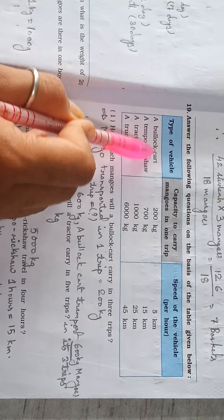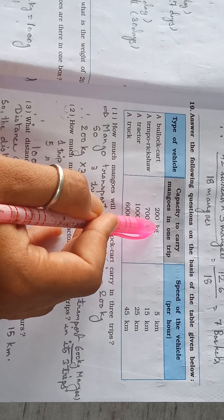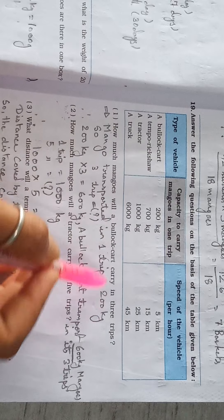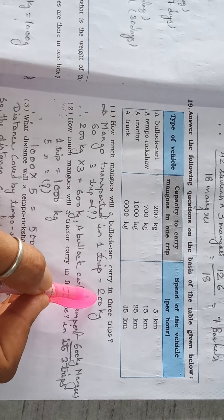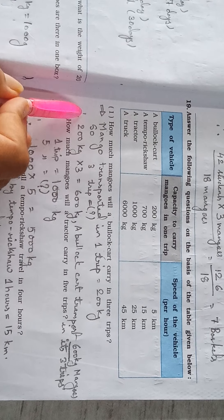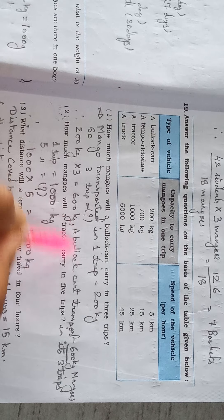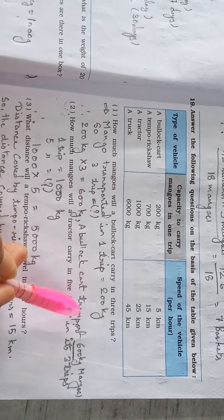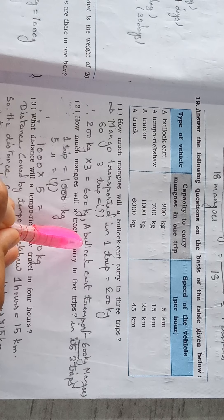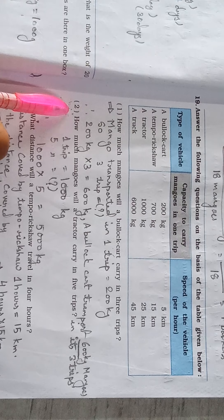First, we look at the bullock cart. They are carrying 200 kg per trip. Mango transported in one trip is equal to 200 kg. So for 3 trips, therefore 200 kg multiplied by 3 equals 600 kg. A bullock cart transports 600 kg of mango in 3 trips.